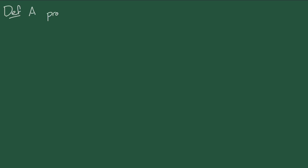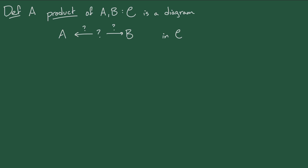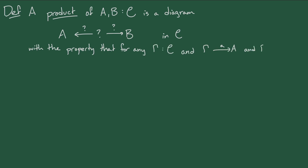So if we have a category C and two objects A and B, then we say that a product of A and B is an object in C together with a map from that object into A and a map from that object into B — a diagram that looks something like this. That diagram has to have the property that for any object gamma of C that has a map from gamma into A and from gamma into B, there's a unique map from gamma into the product object, usually called the pairing of the two maps out of gamma, for which both of the triangles in this diagram commute.